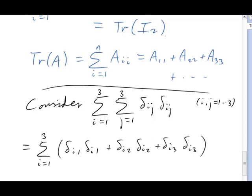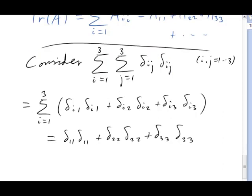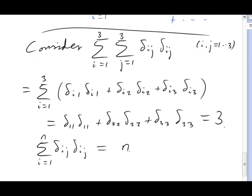In fact, the only three terms that survive would be the ones with delta 1,1 squared, delta 2,2 squared, and delta 3,3 squared. But remember, each of those deltas is just one, so this gives us the result 3. It shouldn't be too hard to see that if we used n dimensions we would get the result n. Is this a surprise? No, not really. Think of it this way.